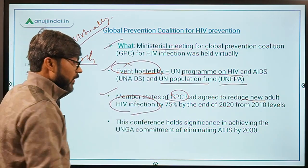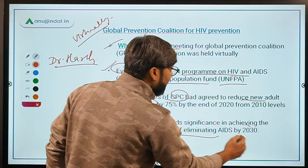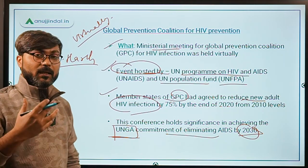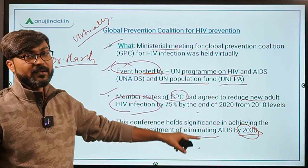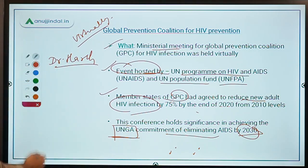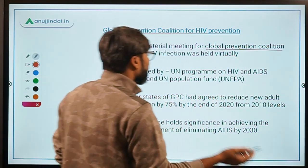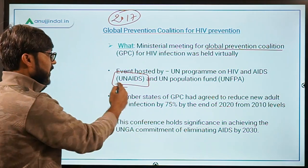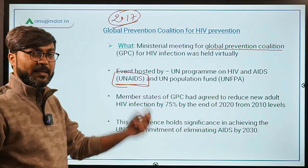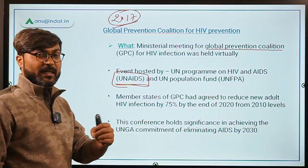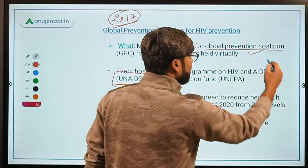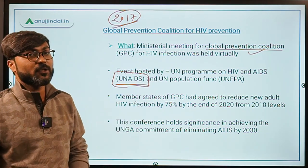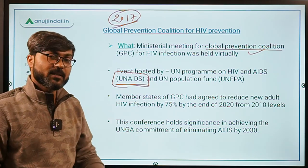This target is in line with the UNGA commitment to eliminate AIDS by the year 2030. UNGA stands for United Nations General Assembly. This coalition was established in 2017 under the United Nations Programme on HIV and AIDS. It is a coalition of various high-risk countries, NGOs, and civil society organizations.